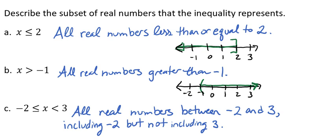So here I got all real numbers between negative 2 and 3, including negative 2, but not including 3. So what would this look like if we looked at it graphically? So here we would see a bracket at our negative 2 and a parenthesis at our 3, and then the line would connect the two.